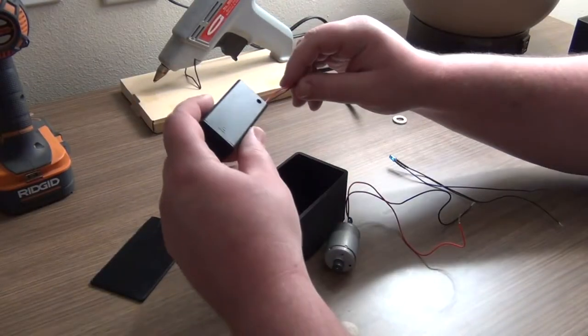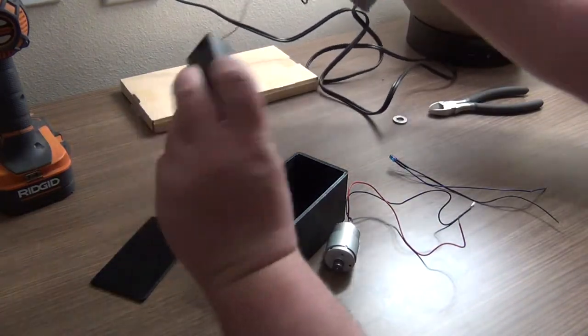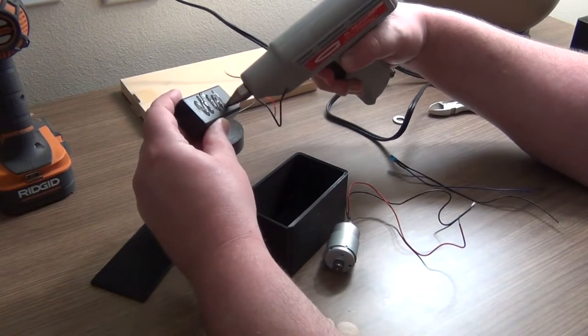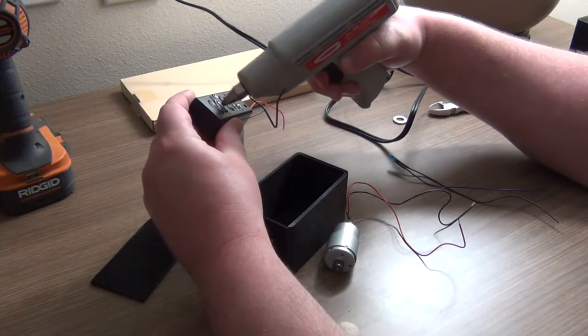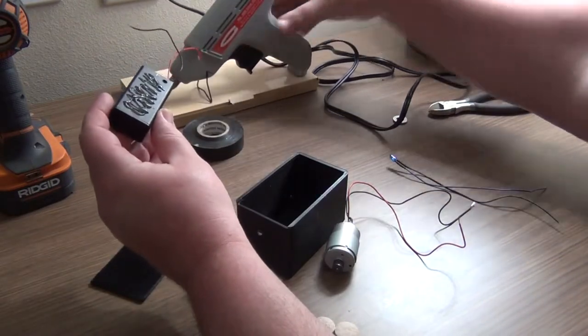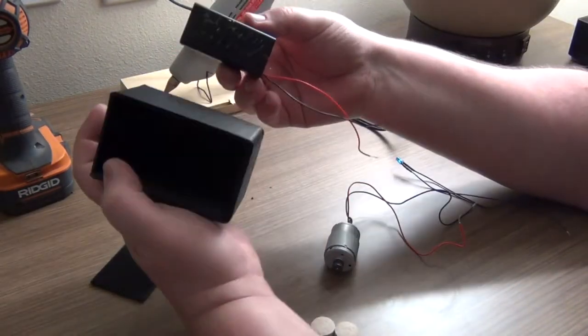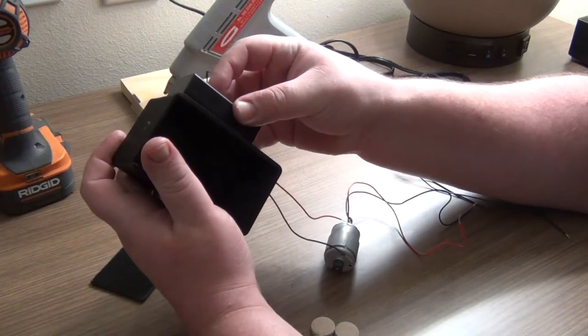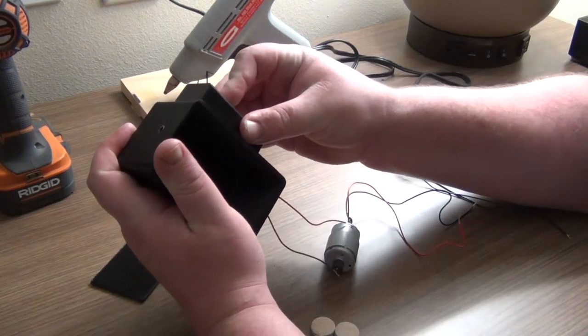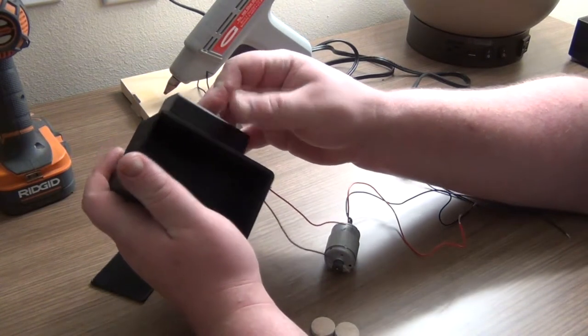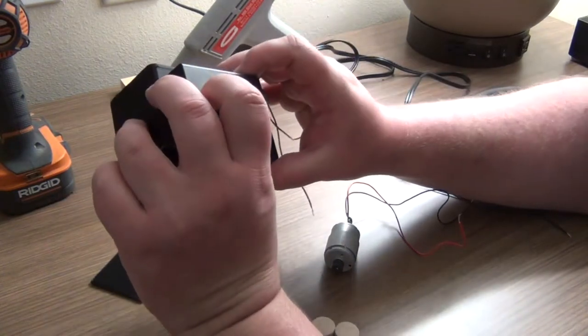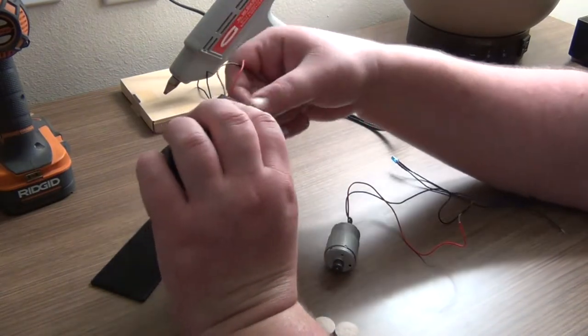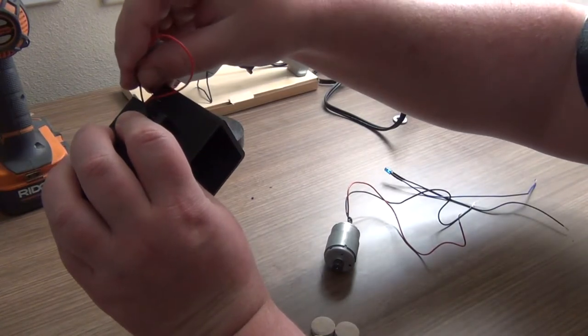Alright, next thing we're going to do is glue our battery pack because I have this one with the switch onto the outside of our box with hot glue. I use hot glue in all of my projects. It's not extremely permanent but it is very sturdy. So you can count on it. Make sure we're lined up here. And the hole we put on the side, we're then going to put our power wires through there.